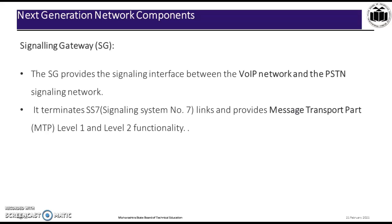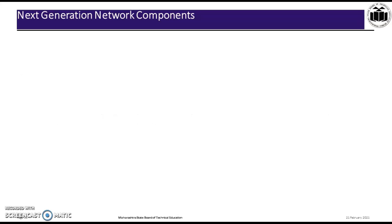The Signaling Gateway provides the signaling interface between the Voice over Internet Protocol network and the PSTN signaling network. It terminates the SS7 link — that is, Signaling System Number 7 — and provides the Message Transfer Part level 1 and level 2 functionality.